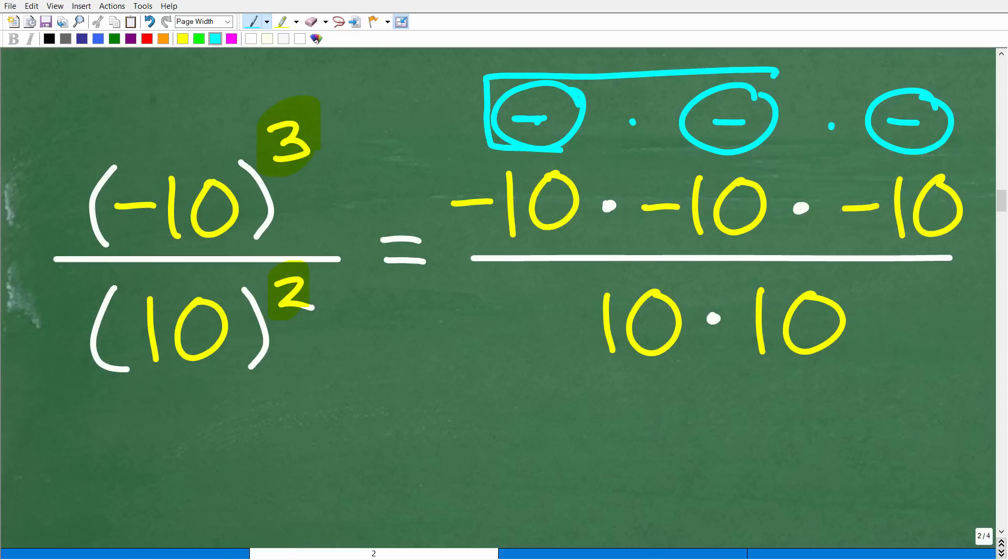So a negative times a negative is what? Well, hopefully you said positive. A negative times a negative is positive, and a positive times a negative is negative. So what I want you to recognize is that the sign of this value over here is going to be negative.